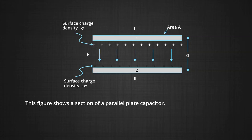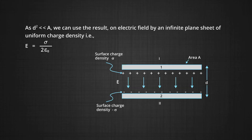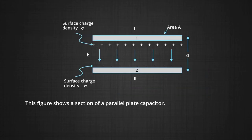And plate 2 has uniform charge density minus sigma, because it is oppositely charged. As D² is much less than A, we can use the result for electric field by an infinite plane sheet of uniform charge density, that is, E is equal to sigma upon 2 epsilon naught. In this figure, the two plates 1 and 2 are shown. The area of the plates is much larger than the distance. Therefore, we can assume that the electric field due to the charge on these plates is independent of the distance and is given by sigma upon 2 epsilon naught.